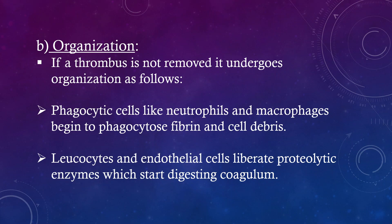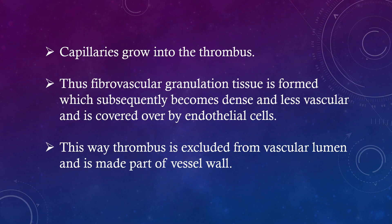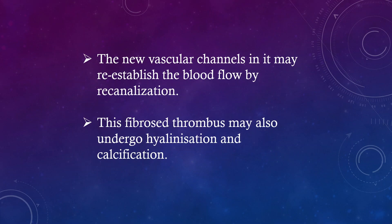Organization: If a thrombus is not removed, it undergoes organization. Phagocytic cells like neutrophils and macrophages begin to phagocytose fibrin and cell debris. Leukocytes and endothelial cells liberate proteolytic enzymes which start digesting the coagulum. Capillaries grow into the thrombus, and fibrovascular granulation tissue is formed, which subsequently becomes dense and less vascular and is covered by endothelial cells. The thrombus is thus excluded from the vascular lumen and becomes part of the vessel wall. New vascular channels may re-establish blood flow by re-canalization, and the fibrous thrombus may also undergo hyalinization and calcification.